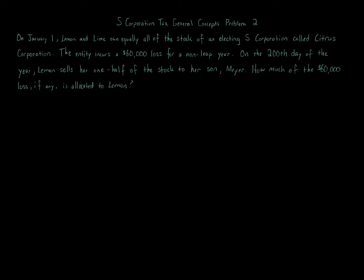This question is actually really simple, a very simple question, but it's very important. It's another one of those things where we stress the distinctions between S corporations and partnerships. This is just asking how much of the $60,000 of loss, if any, is allocated to Lemon.